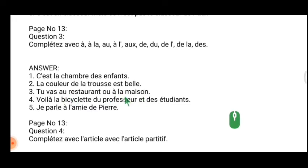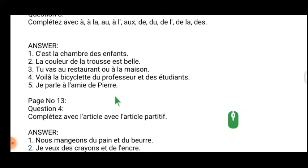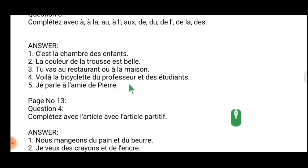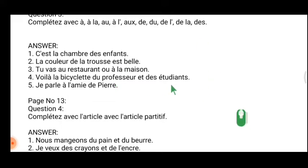The difference is: masculine → 'au,' feminine → 'à la.' 'Voilà le livre du professeur et des étudiants' — 'du professeur' because professor is a person, not a place, so 'du' means 'of the professor.' 'Des étudiants' means 'of the students.' He spoke to the friend of Pierre — here 'de' is the answer as it comes next to a proper noun.